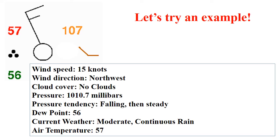From this lesson, we know that the 57 is the temperature, the 56 is the dew point. The current weather, the three dots between the 57 and the 56, is moderate and continuous rain. The open circle represents the cloud cover, which in this case is no clouds. The pole pointing to the northwest is the wind direction, which in this case is from the northwest. The one long and one short flags on the pole represent the wind speed, which in this case is 15 knots.